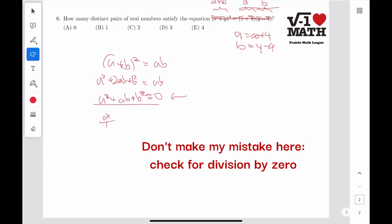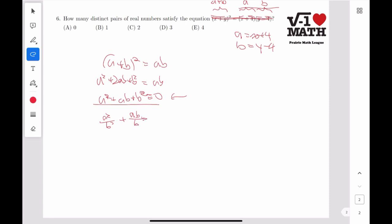We get a squared over b squared plus ab over b squared plus b squared over b squared equals 0. This is after dividing both sides by b squared.